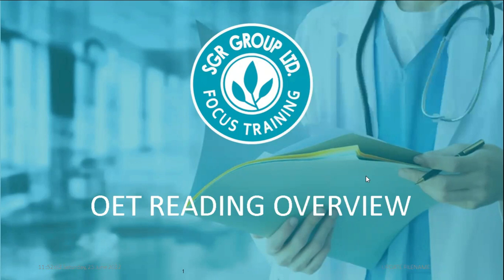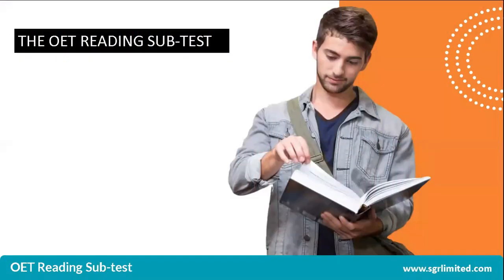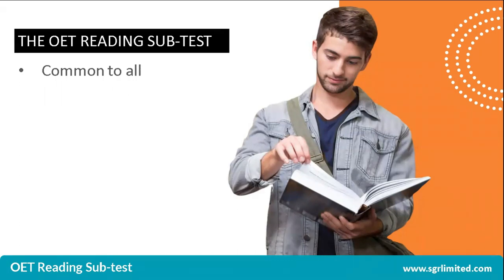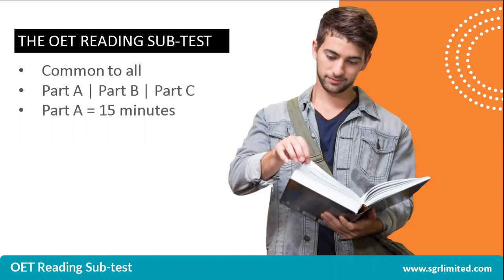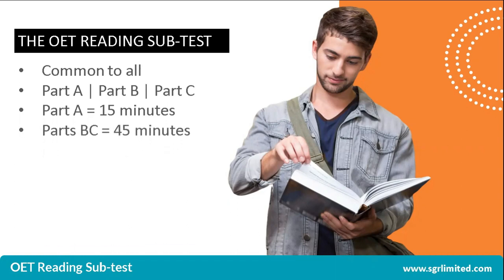The OET Reading Overview. The OET reading subtest is the same for all healthcare professionals. It is designed to test not only the specific skills required when working in a healthcare context, but also the understanding of the functions that the different texts serve. There are three distinct parts: Reading Part A, Part B, and Part C. Candidates are given 15 minutes to complete Part A, and the papers are collected afterwards. A further 45 minutes is given for Parts B and C, which are contained in a separate booklet.